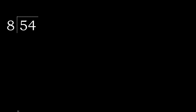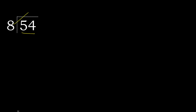54 divided by 8. 5 is less, therefore next. 54 is not less, therefore with 54. 8 multiplied by which number is nearest to 54 but not greater.